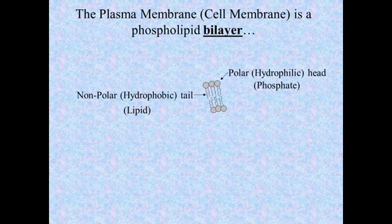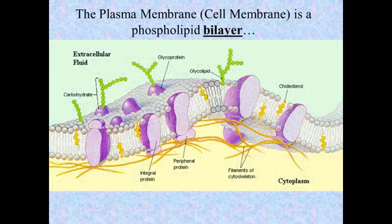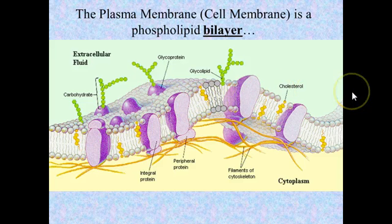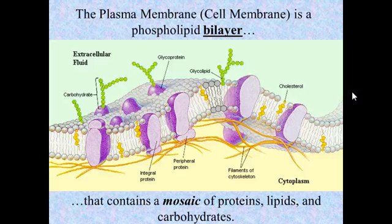When we get a whole bunch of these things together, they form a layer, and this would translate to the cell membrane. As you can see, there's lots of other stuff in the cell membrane too — all of these various proteins and so forth. We say that this is what we call a mosaic of proteins, lipids, and carbohydrates that all go together to make up the cell membrane.